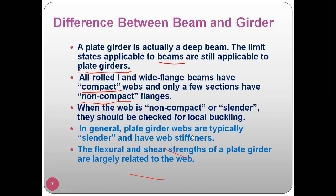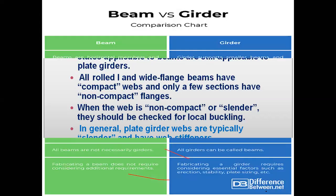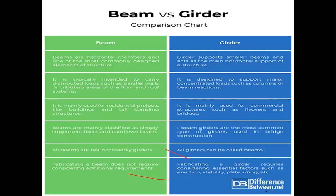In general, plate girder webs are typically slender and have web stiffeners. As we know, plate girder webs are very slender — their thickness is small compared to their length — and therefore require web stiffeners. The structural and shear strength of plate girders are largely related to the web. So webs must be designed for flexural and shear strength of a plate girder.